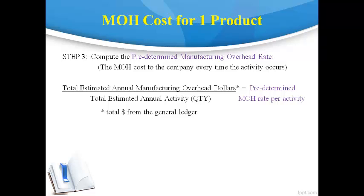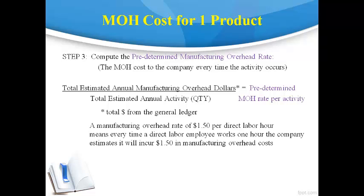The cost every time the activity occurs is then multiplied by the quantity required to make one product to get the total manufacturing overhead cost for one product. For example, a predetermined manufacturing overhead rate of $1.50 per direct labor hour means that every time a direct labor hour is worked, the company pays $1.50 for manufacturing overhead — covering the cost of the facility and management. If a product requires a half hour to make and the overhead rate is $1.50 per hour, then one unit is expected to cost $0.75 in manufacturing overhead.